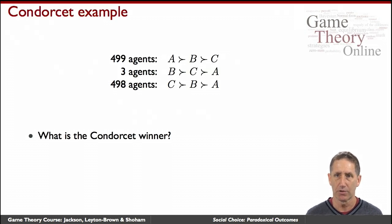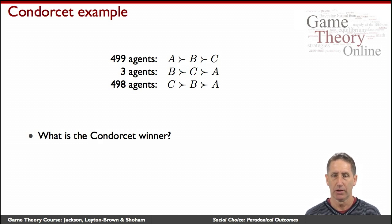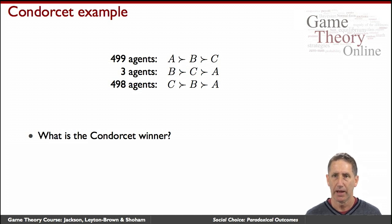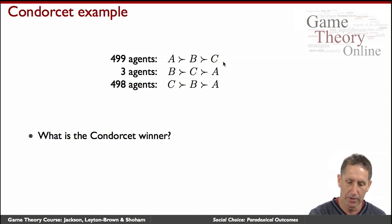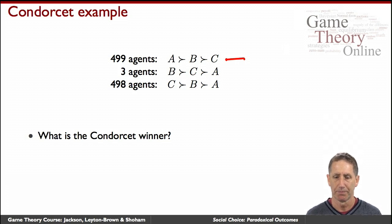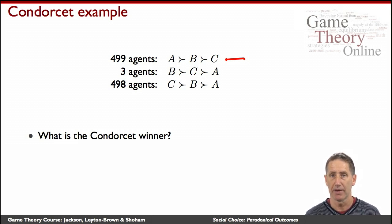Let's start with the Condorcet condition, which on the face of it is incontrovertible, and consider the following example. We have a thousand agents and here are their preferences. For example, 499 of them prefer A to B to C, and so on for the others. The first question is: not every voting situation has a Condorcet winner — does this one? It's a good time to pause the video and think about it.